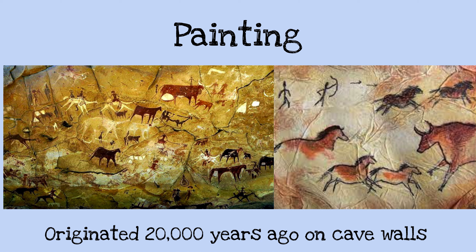These people would get charcoal or dirt mixed with some water, and they would make their own paint so that they could put it on the cave wall. Obviously today our paintings look a little different than this, but this is where it originally started — about 20,000 years ago.